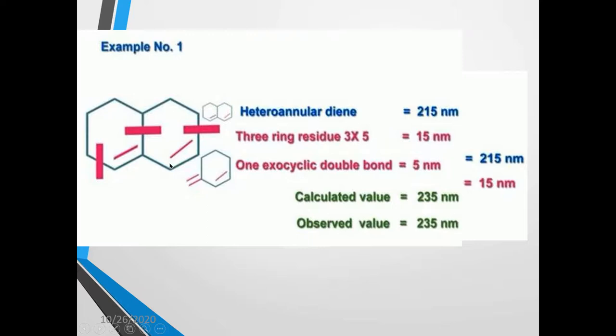We can see in this figure: this is the basic diene structure with 4 carbon atoms. To the fourth carbon atom, there is one CH2 group which is a part of the ring — it is called as ring residue. Again, one more carbon atom is attached which is also part of the ring — also called as ring residue. And lastly, at another point there is an attachment of a carbon atom which is also called as ring residue. In all, there are three ring residues. The ones attached directly to this basic structure are considered; others farther away do not have that much influence on varying the lambda max value and so are not considered.